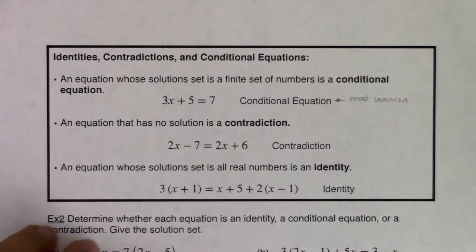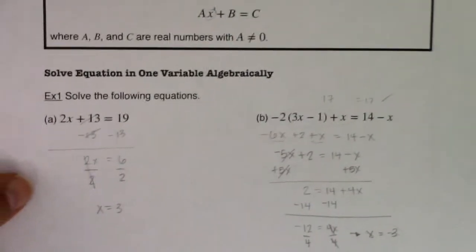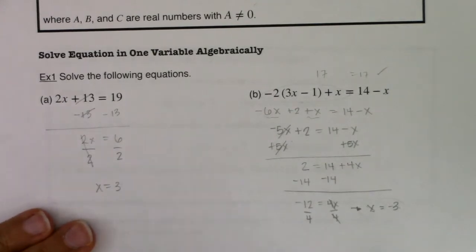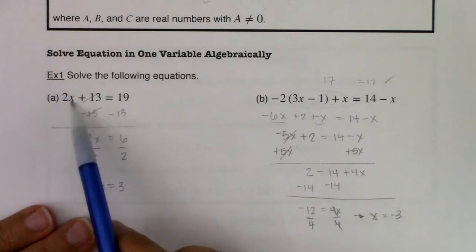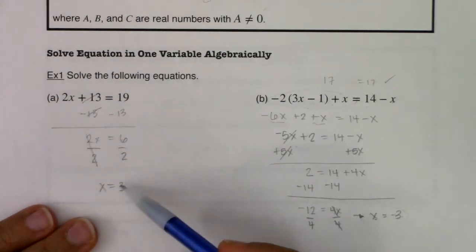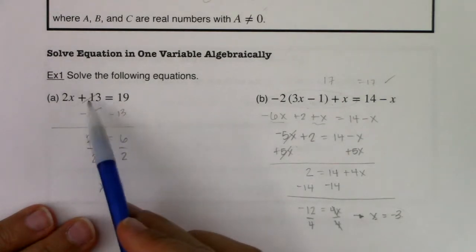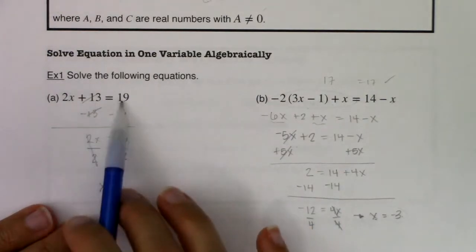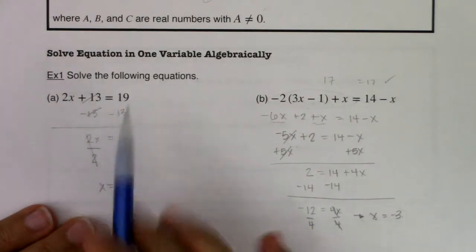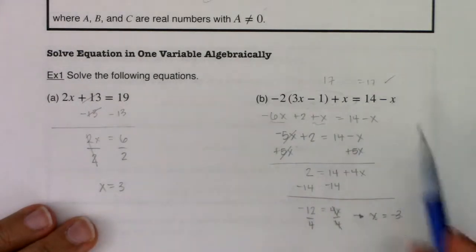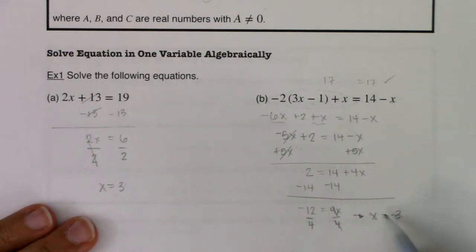This equation holds true with equality on the condition that x is 2/3. Referencing back to example one, those were both conditional equations. The only time equality was true was on the condition that x equaled 3 — the left side equaled the right side only when x = 3. If x was any other number, equality didn't hold. The second equation was true only on the condition that x equaled negative 3.